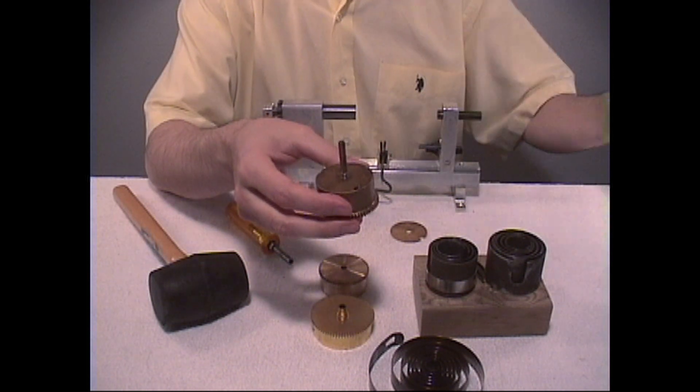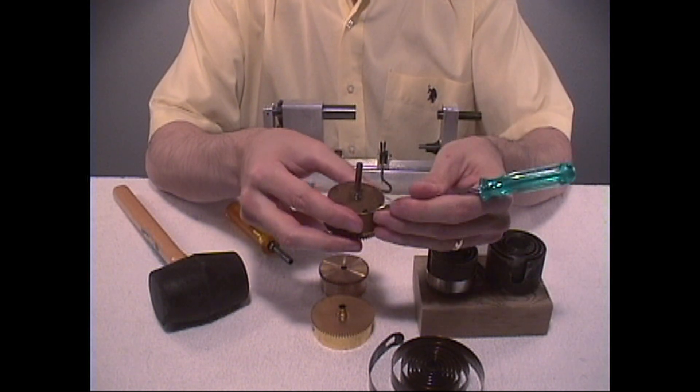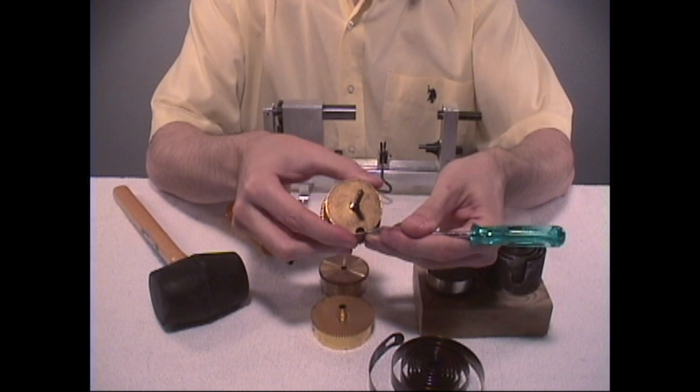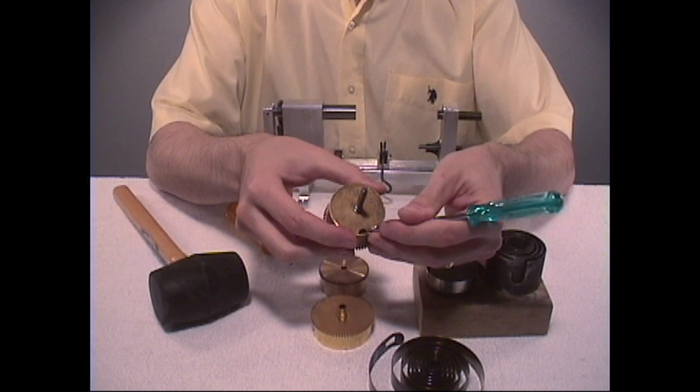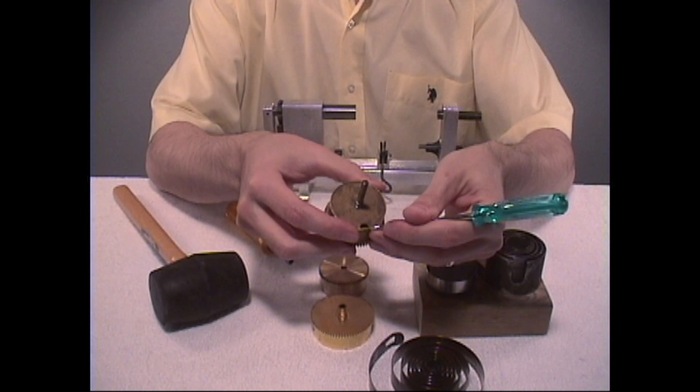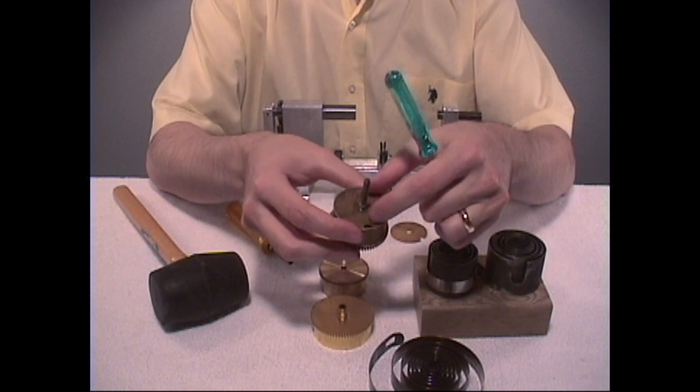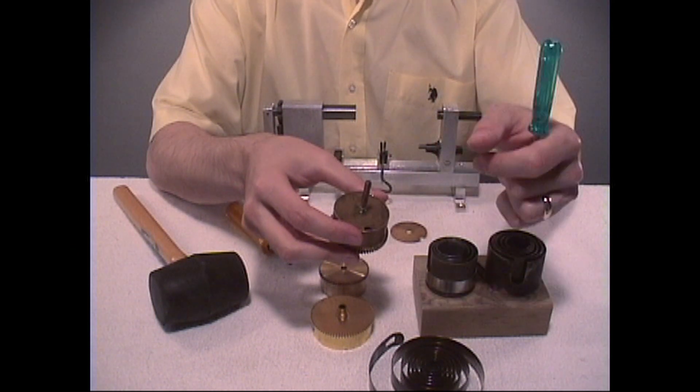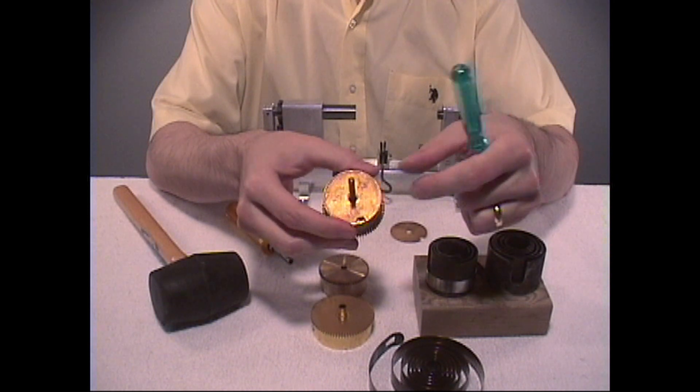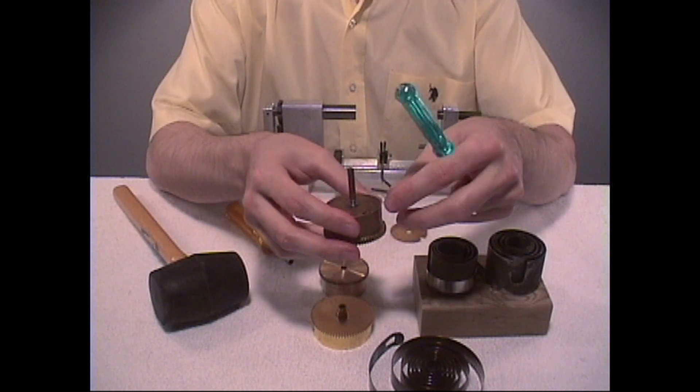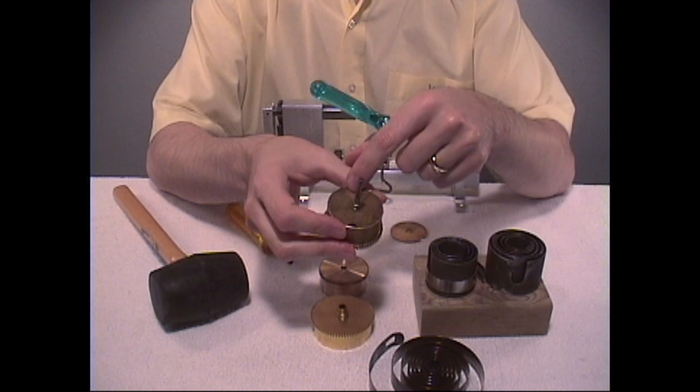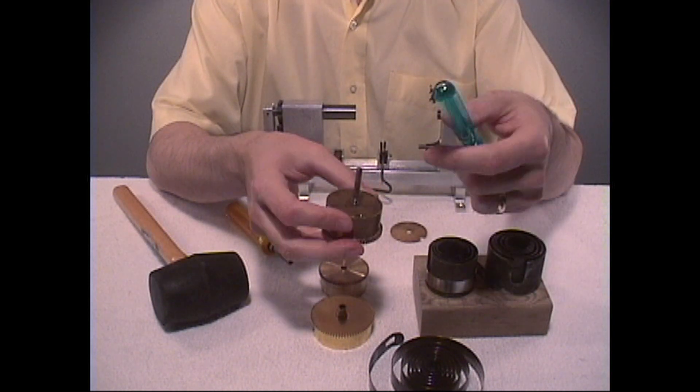What you might want to do is take a scriber and scribe a line right at the left side or the right side entrance to this opening gap here, so you can know how to realign and recenter your spring barrel cap back onto the barrel itself. Because otherwise, if you have this twisted around to the other side, you might have a difficult time.